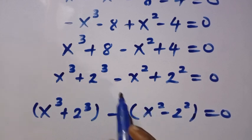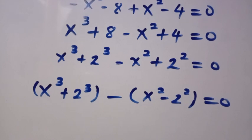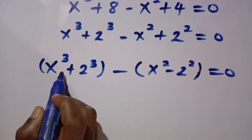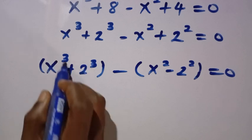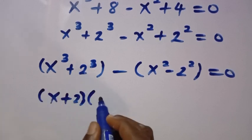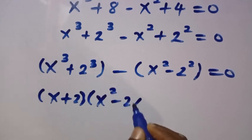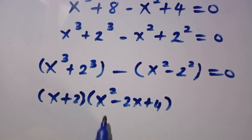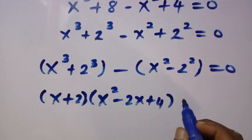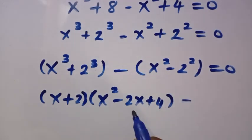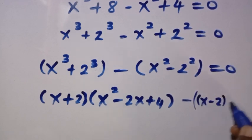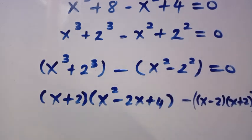Because of this negative we take out. We look at this identity — this is the sum of two cubes: x cubed plus 2 cubed, which we write as x plus 2 multiplied by x squared minus 2x plus 4. And here is the difference of two squares, which we write as x minus 2 times x plus 2, and everything equals 0.